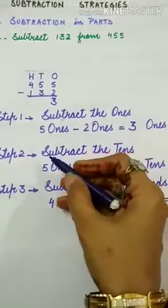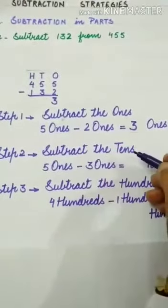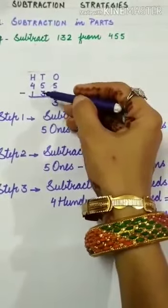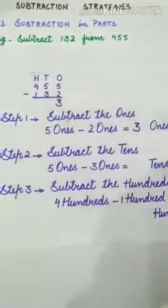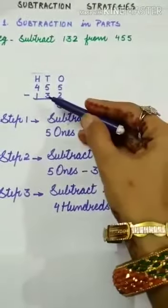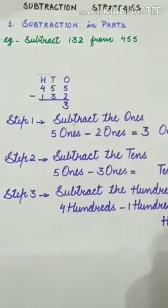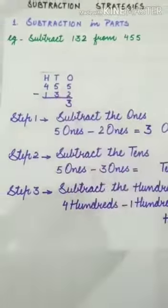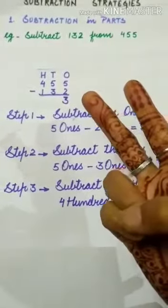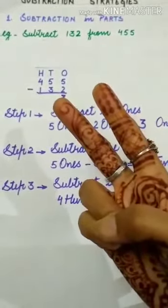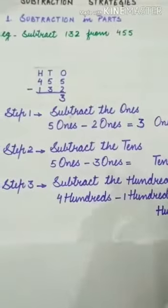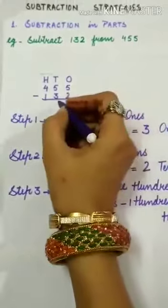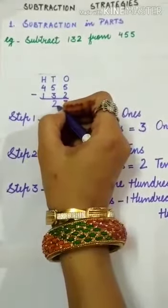Now step 2 is subtract the tens. At the tens place the digits are 5 and 3. Start counting after 3: 4, 5. How many fingers I have used? Two fingers. So write down 2 under the tens column.